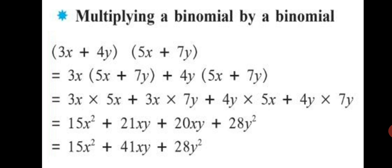Now look for any like terms. The second and third terms both have the variable xy, so we can add them: 21xy plus 20xy is 41xy. The first term has x squared and the last term has y squared, so we cannot add them and keep them as they are. Final answer: 15x squared plus 41xy plus 28y squared.